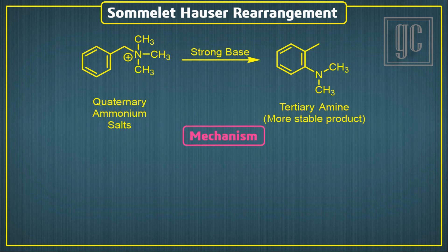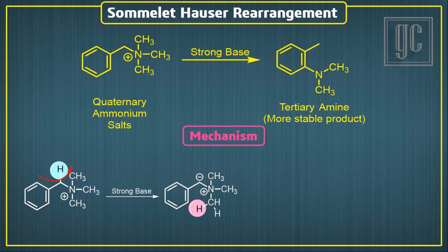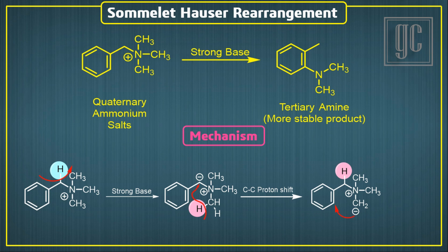Now we are going to discuss the mechanism of this rearrangement. In the presence of a strong base, one alpha hydrogen atom is removed and a carbanion intermediate is formed. This carbanion is rearranged by a proton shift. The carbanion then attacks the carbon of the benzene ring or double bond, and displacement of the pi electrons takes place.